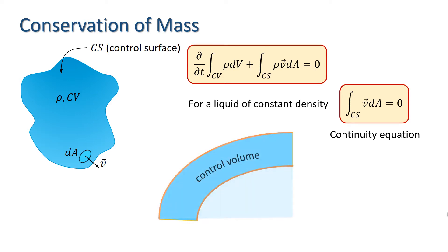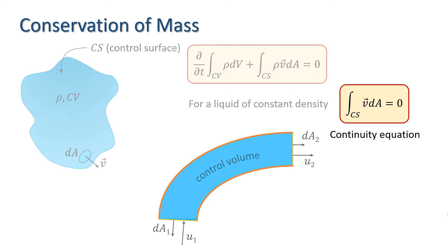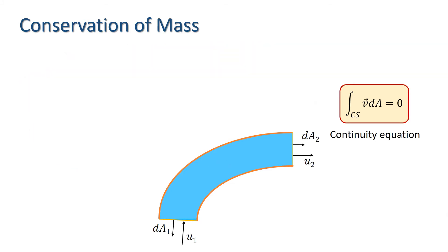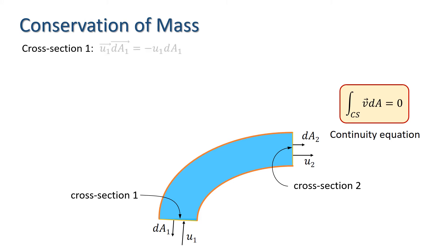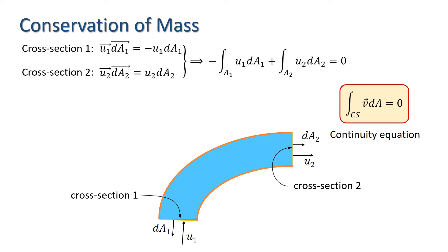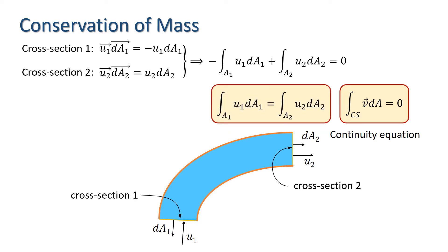Let's consider now a portion of pipe as a control volume. There's no flow through the walls of a pipe, so the only flow is through the cross sections at either end. At cross section 1, the outflow will be minus u1 dA1, where the minus sign appears since the flow is going into the pipe at that cross section. At cross section 2, the outflow will be u2 dA2. Applying the continuity equation, this yields: the integral of u1 dA1 equals the integral of u2 dA2.